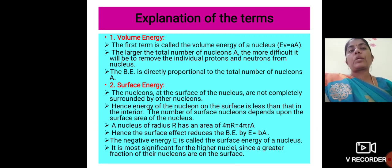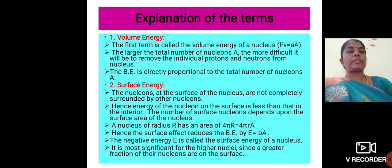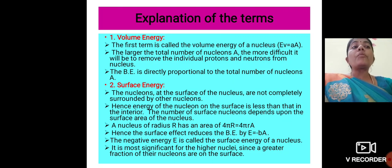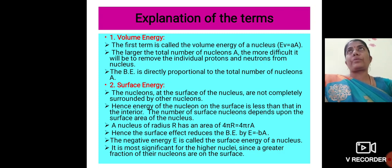The first one is volume energy. The first term of this equation is called the volume energy of the nucleus. The larger the total number of nucleons, the more difficult it will be to remove the individual protons and neutrons from the nucleus. So the binding energy is directly proportional to the total number of nucleons.